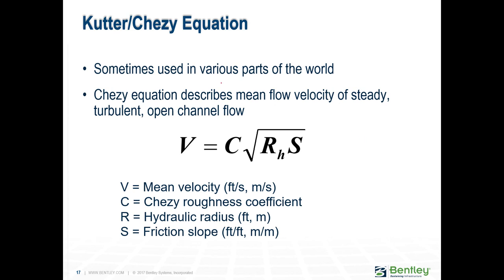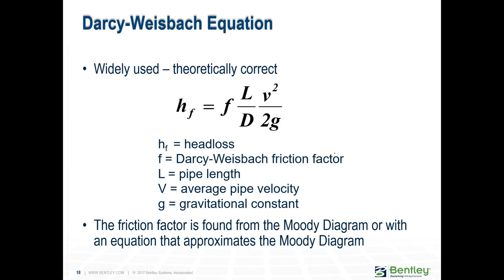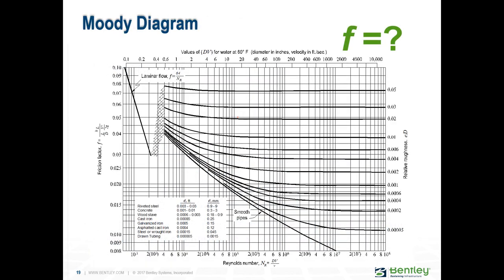Other parts of the world use different equations like the Chezy or the Darcy-Weisbach. The problem with Darcy-Weisbach is that to come up with the friction factor, it's not a value you look up on a table. To determine the F value, you use the Moody diagram. You must know the Reynolds number, and then you need to know the relative roughness, which is one of the lines on the diagram. The relative roughness is a combination of diameter and pipe material type, and with that information you read your F value.